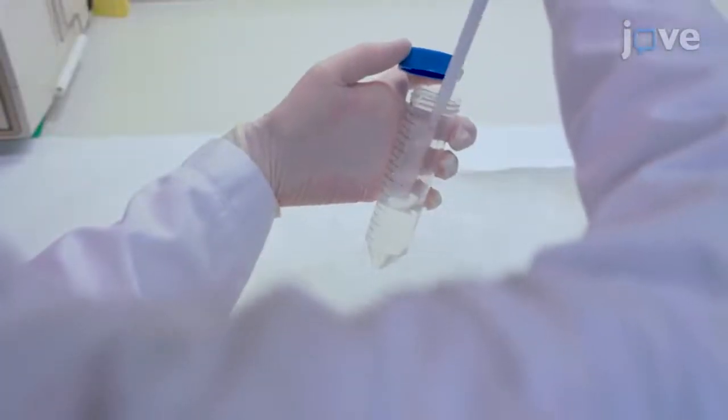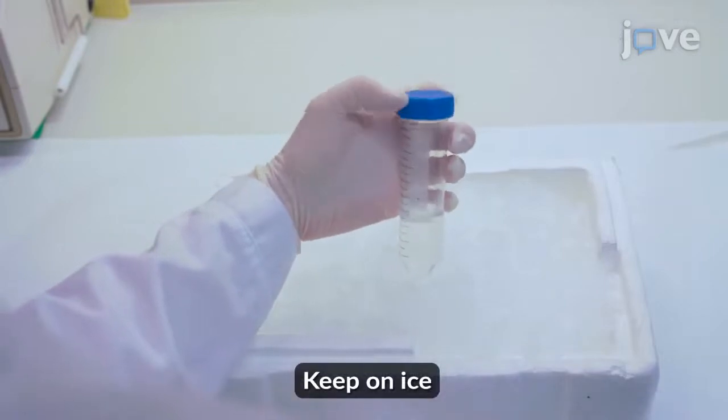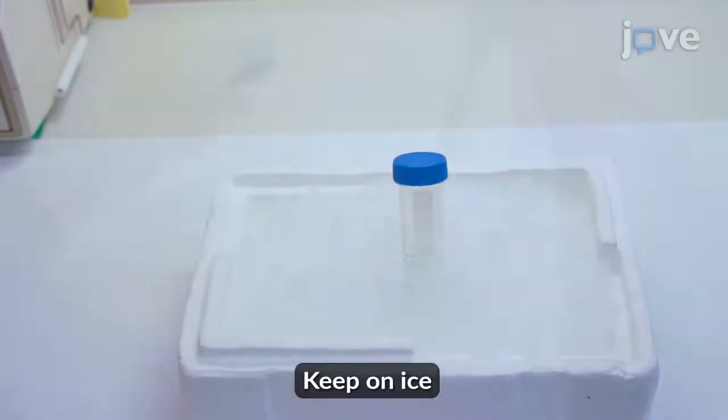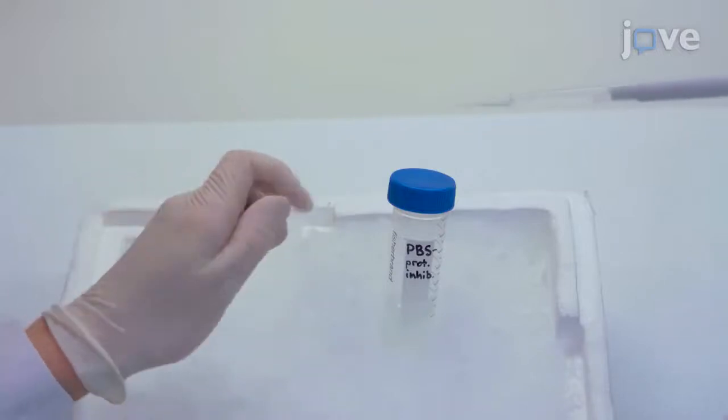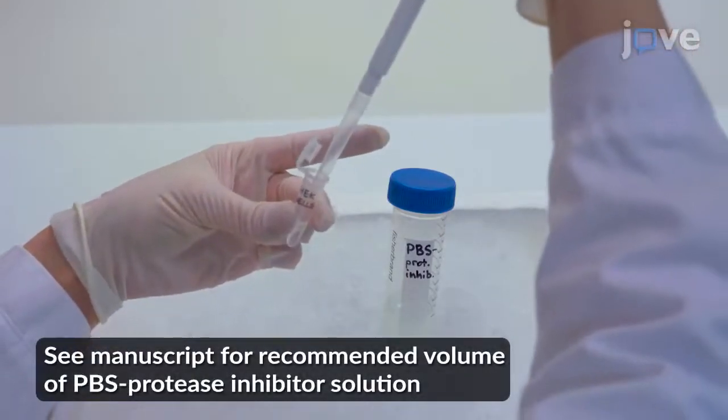Next, add 200 microliters of 100x protease inhibitor to 20 milliliters of PBS. Resuspend the cells in the PBS protease inhibitor mixture to a final protein concentration of 5 milligrams per milliliter.